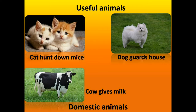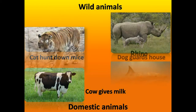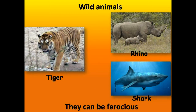These animals live with us and help us in some way. Few animals can't be domesticated — that means they can't live with us. They live in the jungle, ocean, etc. They are called wild animals. Rhino, lion, deer, fox, shark, etc. are wild animals.